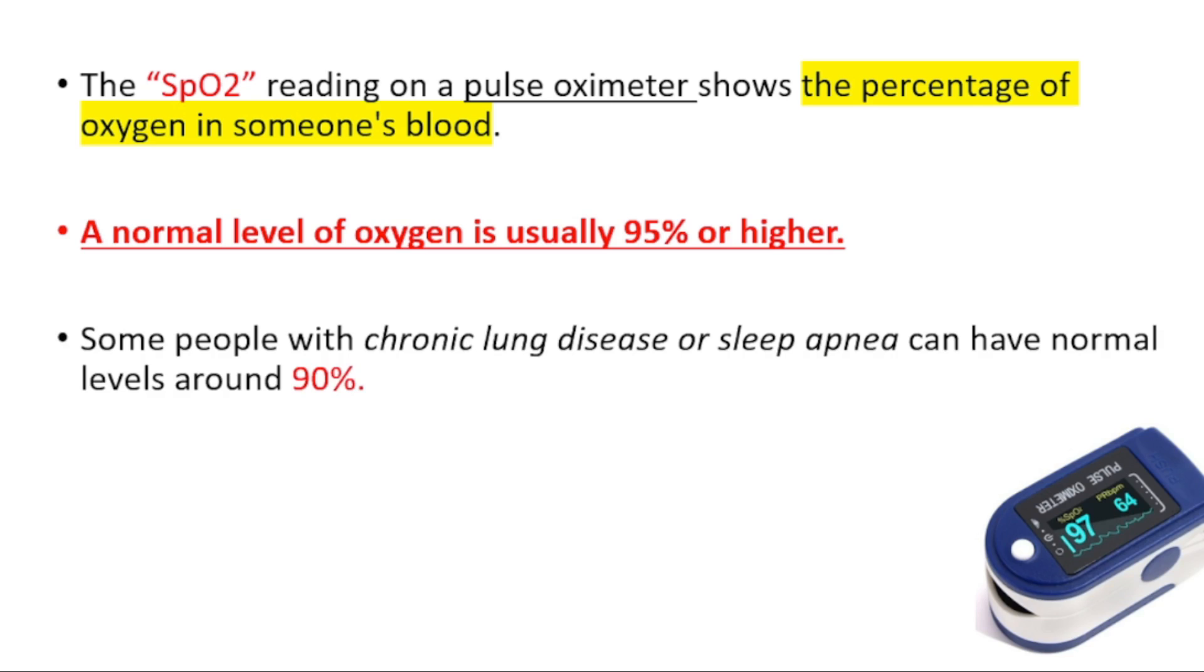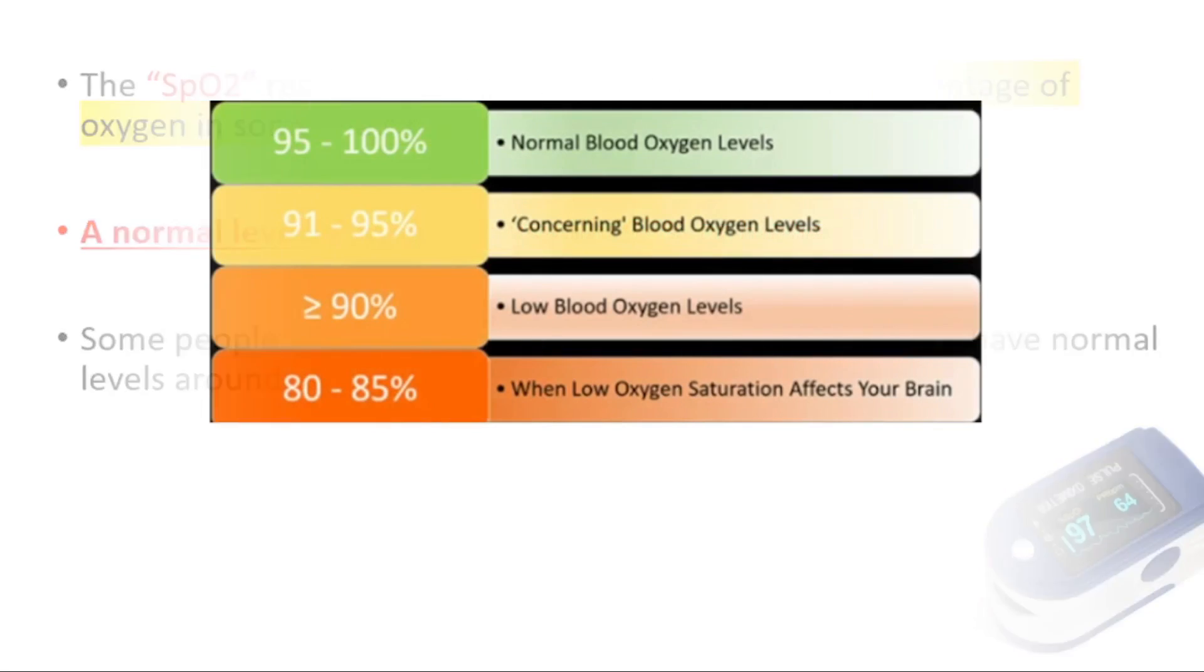Lastly, I will share this table with you. 95 to 100 will be normal, 91 to 95 will be concerning, and less than 90 would be low blood oxygen levels.